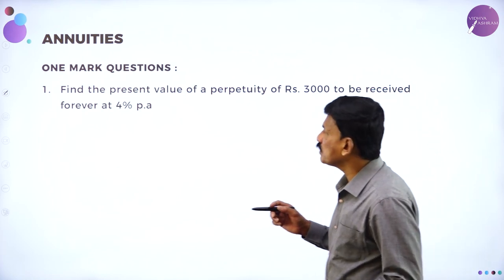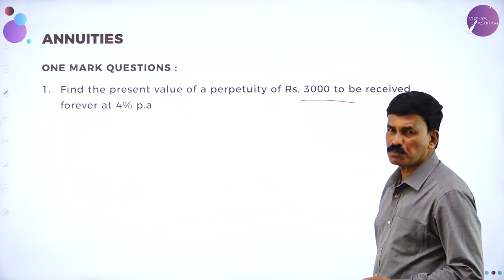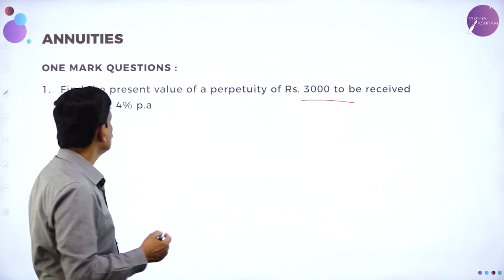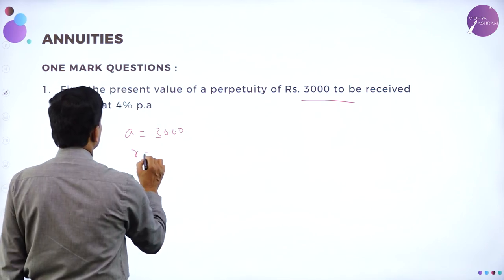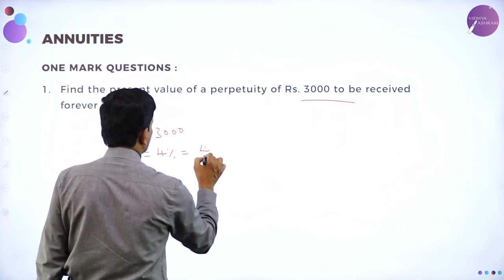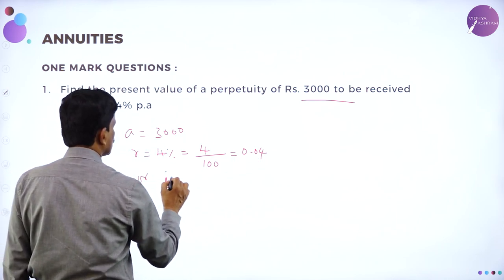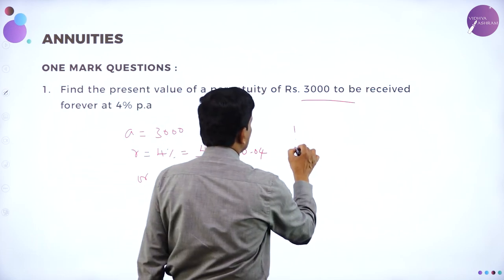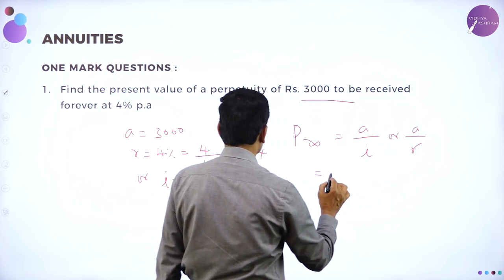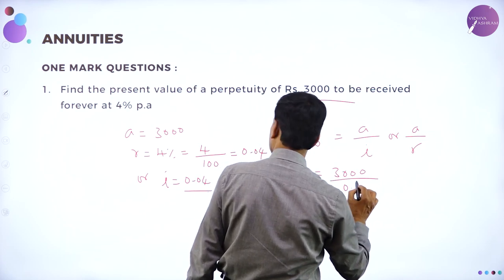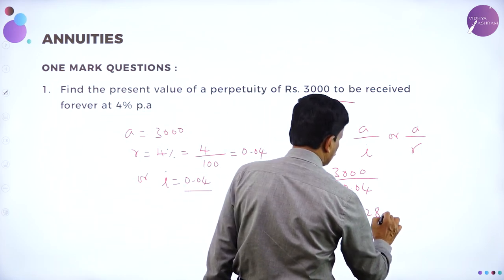Find the present value of perpetuity of rupees 3000 to be received forever at 4 percent per annum. This is a simple one-mark question. A is given as 3000 and rate of interest R equals 4 percent, which means R equals 4 divided by 100, that is 0.04. The formula is P∞ equals A divided by I, which is 3000 divided by 0.04, giving 21,428.5.